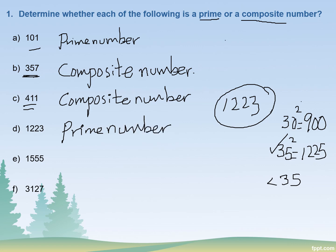For 1555, there is no need to go through the full process. If a number ends in 0, 5, or 2, it is obviously divisible by 2 or by 5. Since 1555 ends in 5, this number is divisible by 1, by 5, and by itself — so of course it is a composite number.